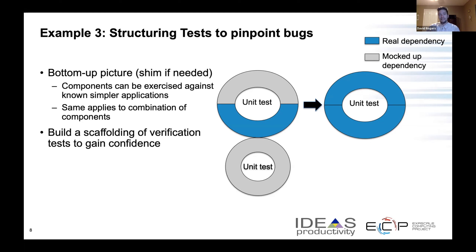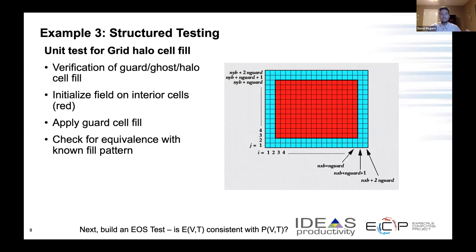The scaffolding approach means that you can test each new piece as it's added, and it lets you separate concerns to understand what's going on. Here's another example of structured testing: how the halo exchange was verified on a cell grid. The test initializes the interior cells with a known function, then does the halo exchange between processors, and it can then check whether the guard cell — the blue region — has been properly copied over from the neighbors.